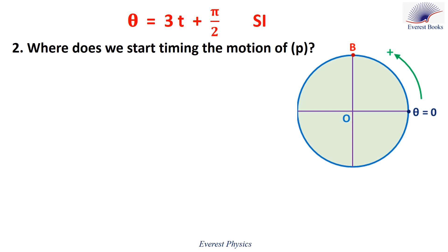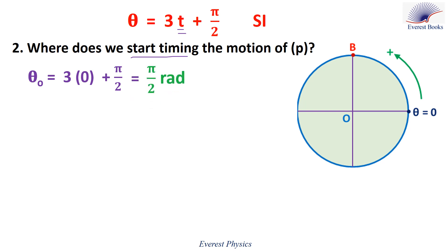Part 2: Where do we start timing the motion of P? We start timing at time T equals 0. Replacing T by 0 in the expression of theta gives theta zero equals 3 times 0 plus π over 2, which equals π over 2 radians. Looking at the circular path, this corresponds to position π over 2, so the particle is at point B when we start timing.